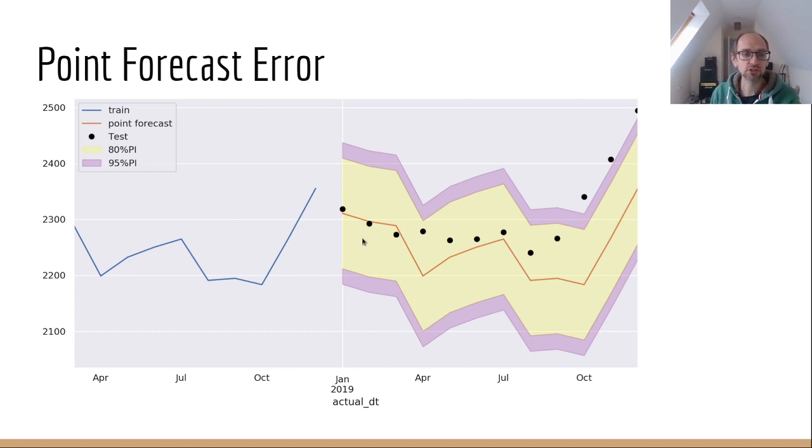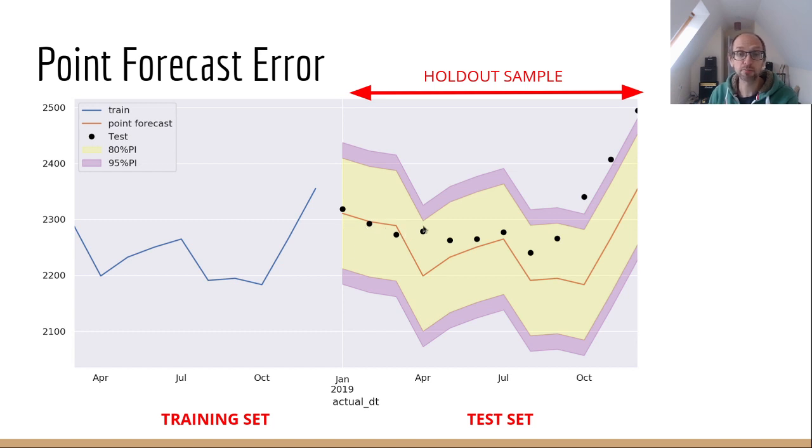Now what we've done here is something called a train test split or a holdout sample. So actually we also have this black dot here, and that represents real data as well. We've taken our actual data and we've split that data set in two, might be something like 70% and 30% or 80% and 20%. We call that bit, that 20%, the holdout sample or the test set.